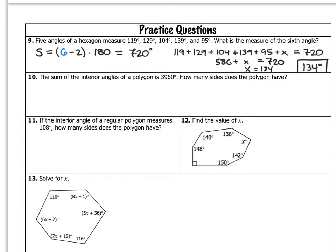Number ten: the sum of the interior angles of a polygon is 3,960 degrees. How many sides does the polygon have? Since I know the sum, I'll use the interior angles formula and put in 3,960 for S. So, the quantity N minus 2 times 180 equals 3,960. I can divide both sides by 180, which gives me 22 equals the quantity N minus 2. Solving for N, I get N equals 24 — so this polygon has 24 sides.